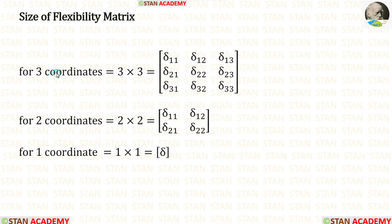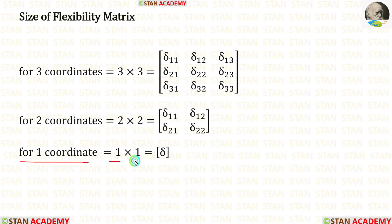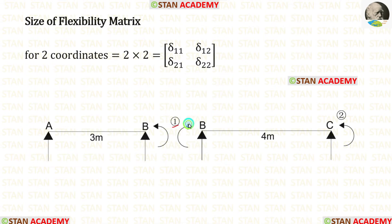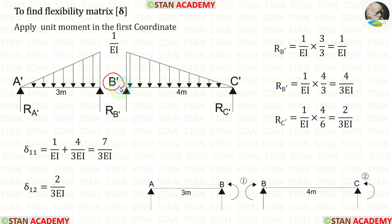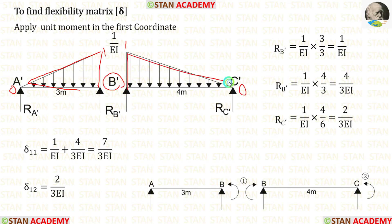Now we are going to make the flexibility matrix. For three coordinates the size would be 3×3; for two coordinates it is 2×2; for one coordinate it is 1×1. In this analysis there are two coordinates, so the flexibility matrix is 2×2. To calculate the first row, we apply a unit moment at the first coordinate. At point B', when we apply unit movement, the moment is 1 at B and 0 at C. Using that, we construct the corresponding diagrams for beams A'B' and B'C'.